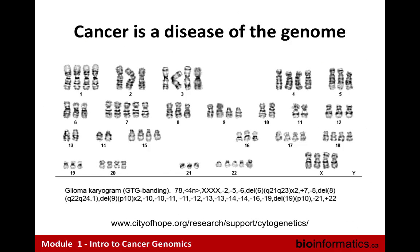Here's a karyotype from a brain cancer — you can just tell by eye it's completely different. There are way more chromosomes than there should be, some chromosomes are missing parts, and pieces of one chromosome are being attached to another. This is really where next generation sequencing shines, because now we can read out all these different types of cancer genome variation not just at the microscopic level but really at the molecular level.